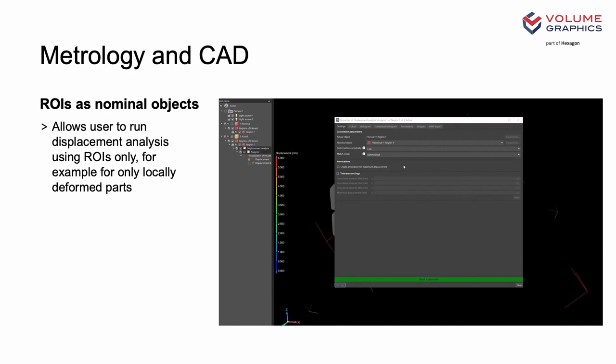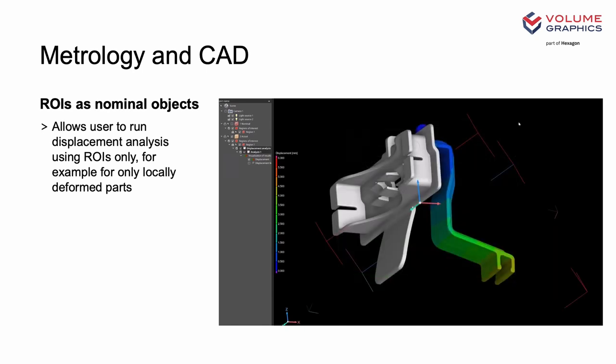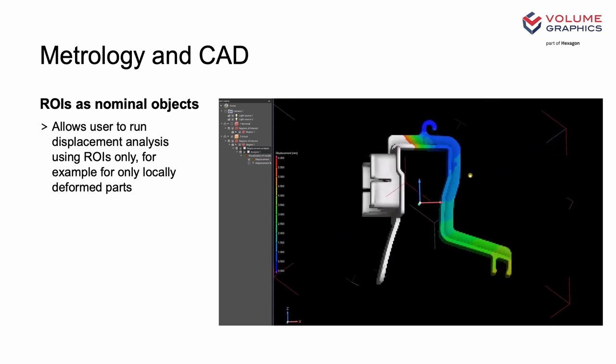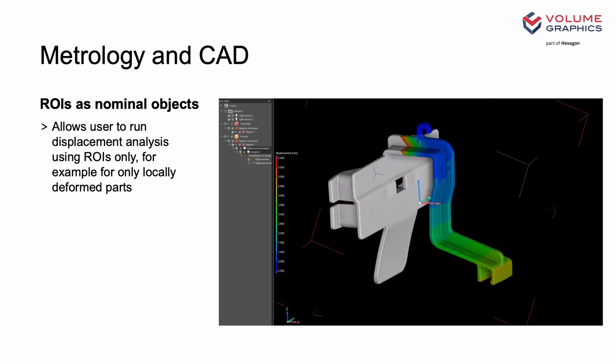In the last release, we introduced the new feature Displacement Analysis. This is a fantastic tool, allowing you to see where any movement has occurred between two different samples or samples in different states, giving a more detailed insight than the normal nominal-actual comparison. Now in the previous release, we were limited to applying this globally. Our customers quite rightly asked, can we maybe localize some of this? So yes, now we can. We've introduced the ability to use regions of interest, meaning you can limit the analysis to certain areas if you wanted a clearer idea of local deformations.